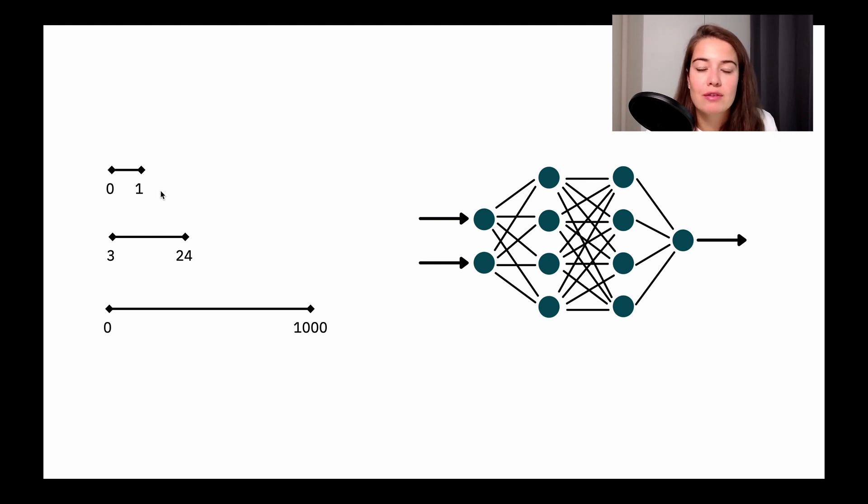one feature that goes from zero to one. So the values could be 0.5, 0.68, 0.9, etc. We have another one that goes from three to 24. You know, this could be like number of houses owned, for example. We might have another one that could go from zero to a thousand. This could be like amount of money in the bank account right now.